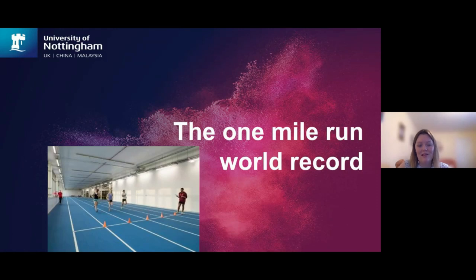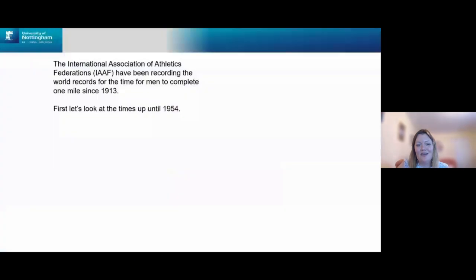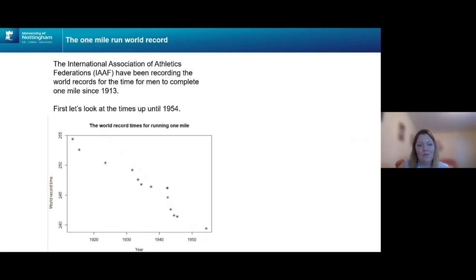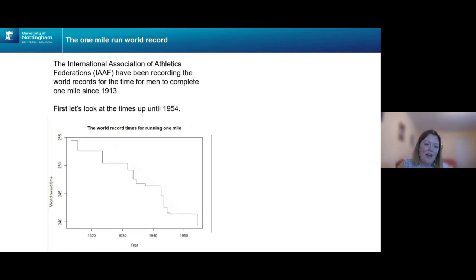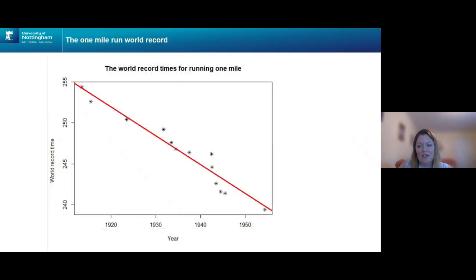In the second part, we look at the one mile run world record. Since 1913, world records for the men's one mile run have been collected. Looking at data up until 1954: the world record in 1913 was just below 255 seconds, and by 1954 it was just below 240 seconds. It seems to follow a pretty linear relationship. Using linear regression, the line is: Y = 927.9915 − 0.3521 × year.